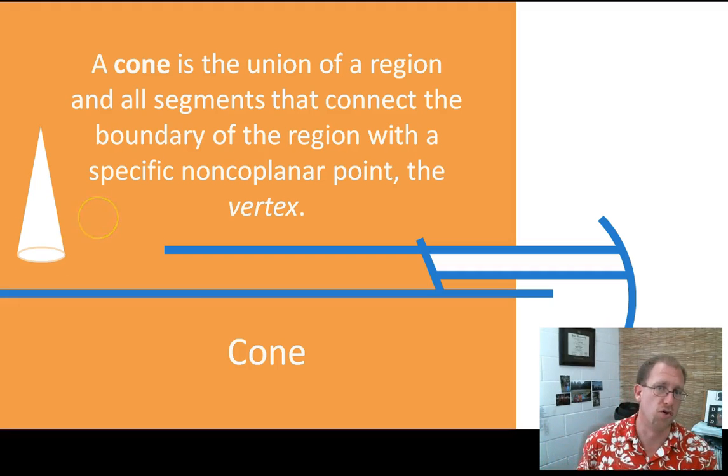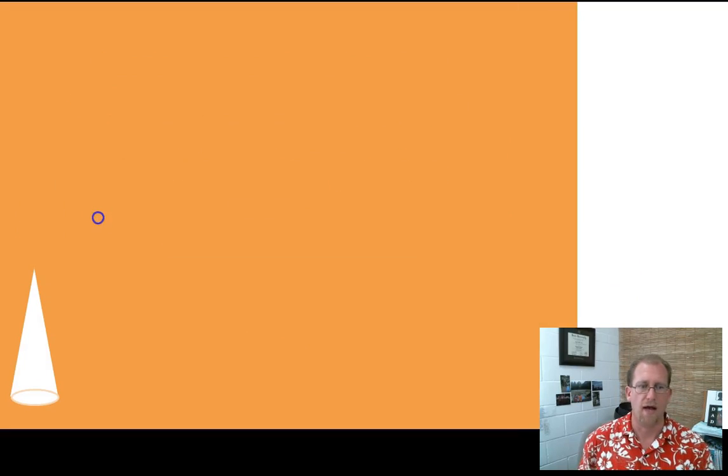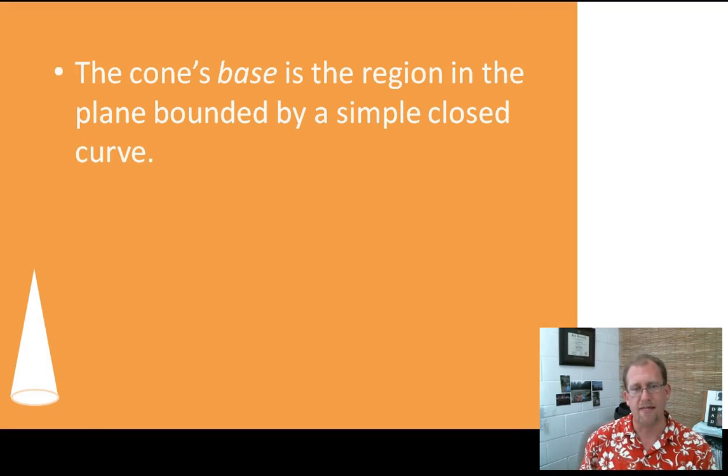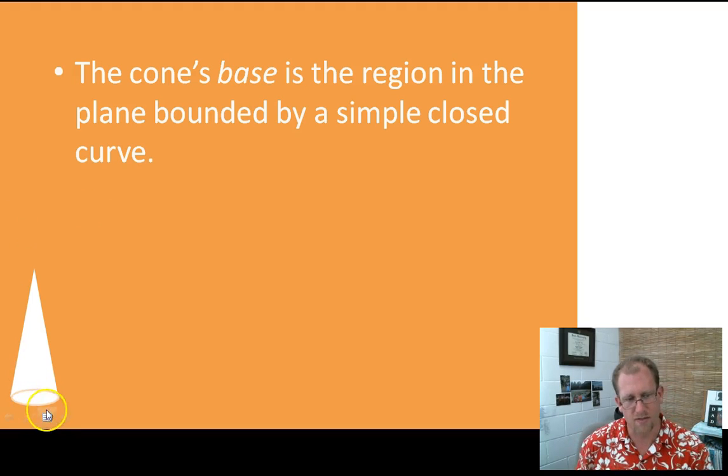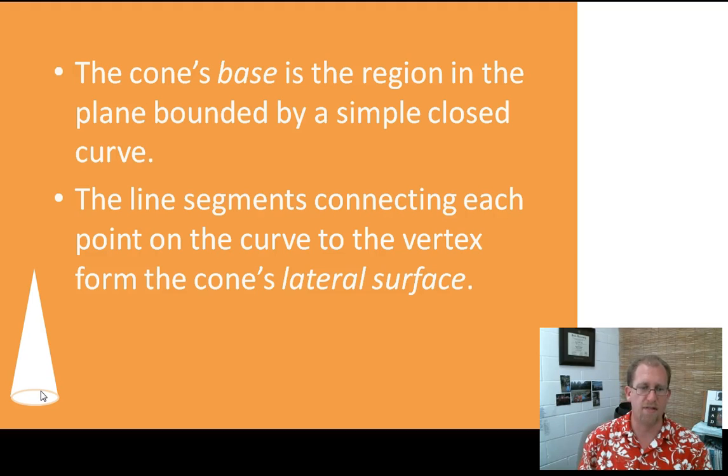We'll see lots of non-circular cones in this lesson. The cone's base is the region in the plane bounded by the simple closed curve. So in this example, it's this circle down here, but it doesn't need to be a circle. And then the line segments connecting each point to the curve form the lateral surface. So all of this area here is the lateral surface. The surface area of a cone is the lateral surface plus the base.